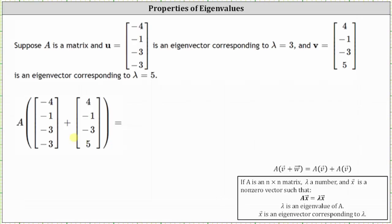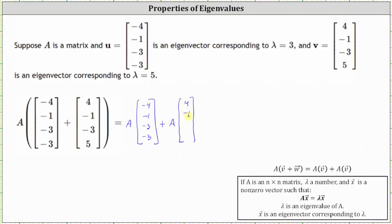Matrix A times the sum is equal to matrix A times the first eigenvector, or vector U, plus matrix A times the second eigenvector, or vector V. We just found these values on the previous slide.